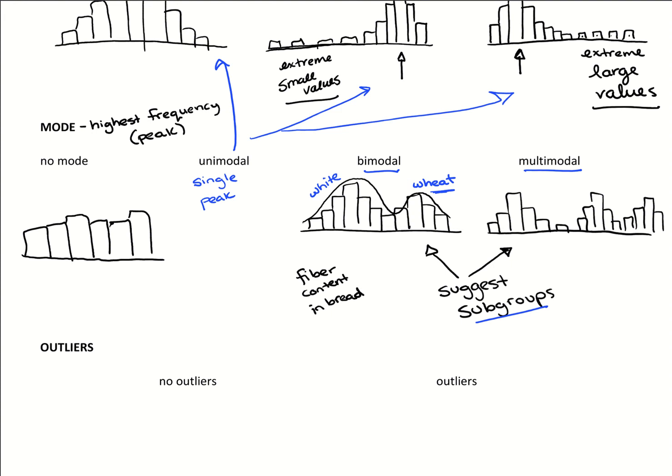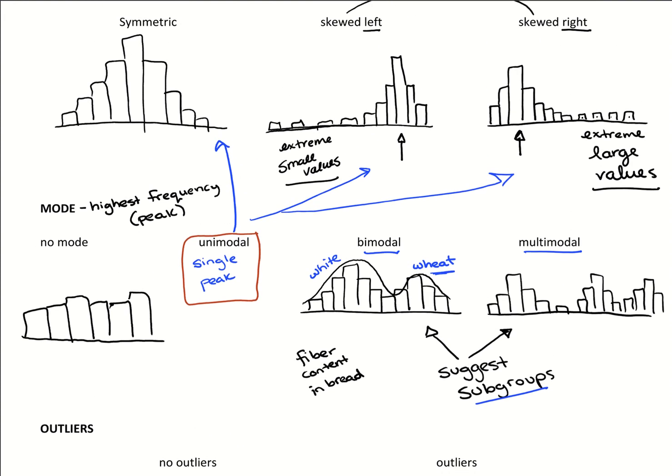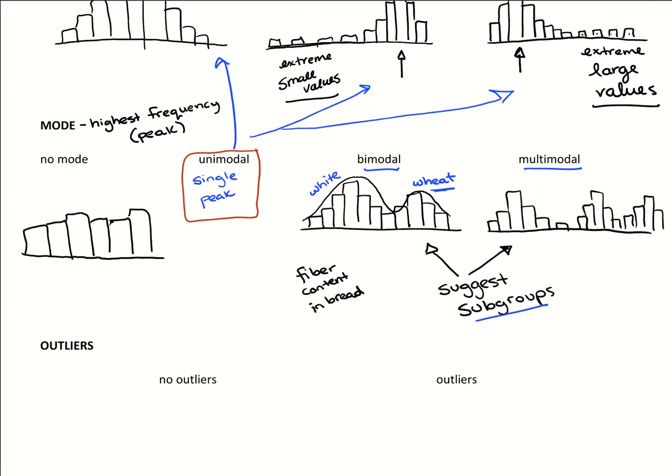In our class, we are mostly going to be focusing on unimodal graphs. So getting a unimodal graph and then describing it as symmetric, skewed left, skewed right. But we want to be careful of these other cases as well.